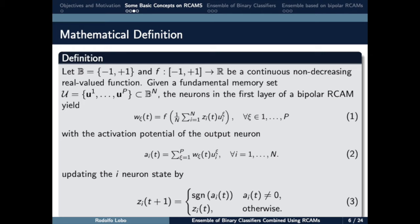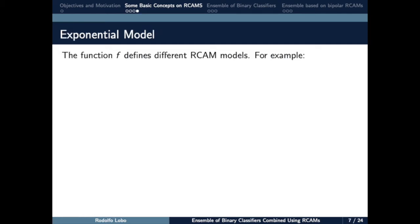And 3 is the evolution equation, which updates the ith neuron state if the activation is different from zero. The F function defines different RCAM models.